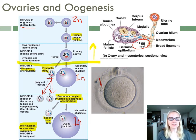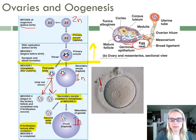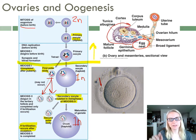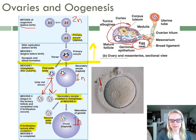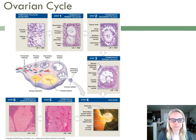So that's the process of oogenesis happening in the ovaries. That picture of the ovary is not at any one time — that's a whole 28-day cycle. So that's going to lead us into our ovarian cycle on the next slide.